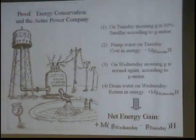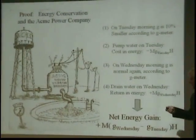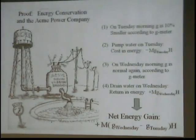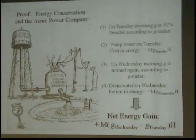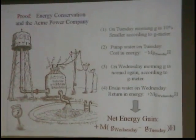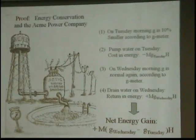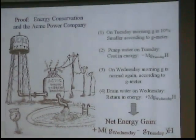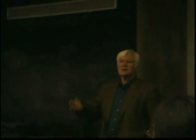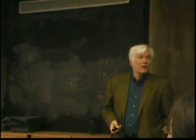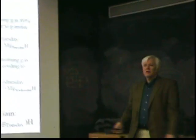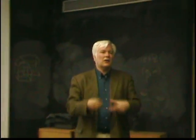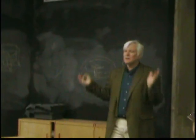Let's suppose we have the Acme Energy Company, a power company based on the discovery of some inventor, that Tuesday mornings at 10 a.m., gravity is 10% weaker than it is for the rest of the week. At 10 a.m., suddenly gravity becomes 10% weaker, stays that way for a while, and by Wednesday it's gone back to its normal value. The inventor made this discovery with a G meter that measures gravity.